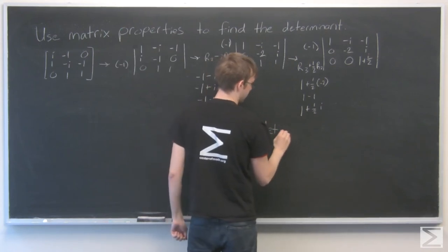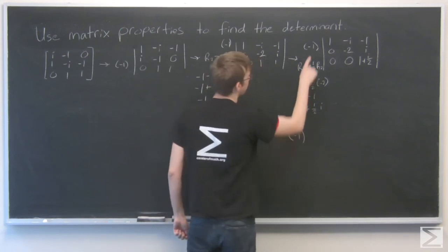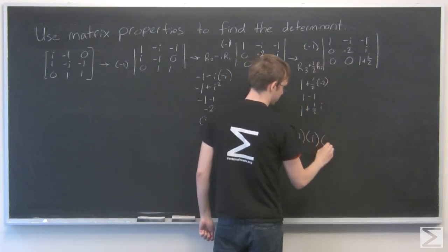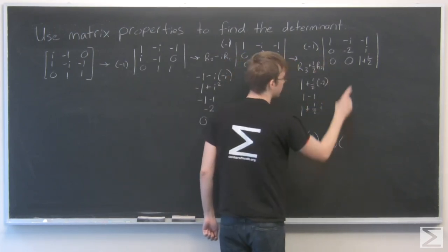So the determinant is going to be negative 1, that one, times 1, times minus 2, times 1 plus i over 2.